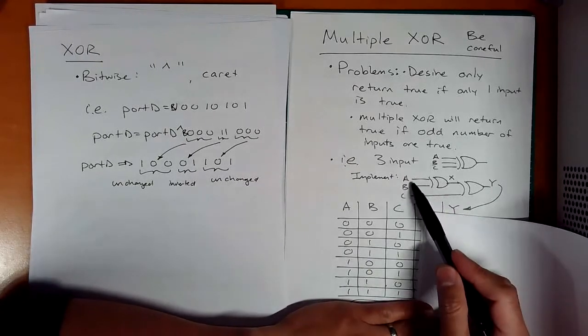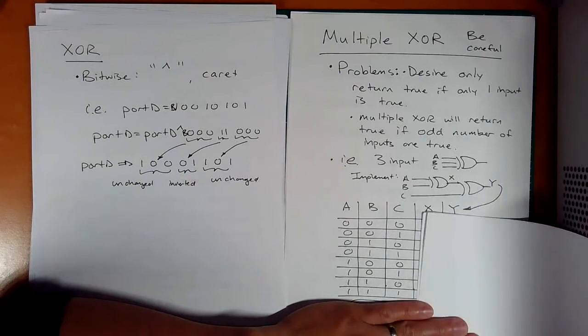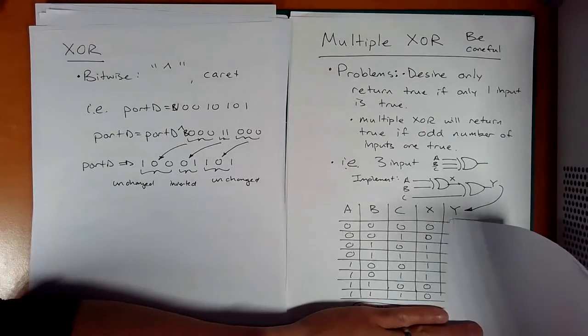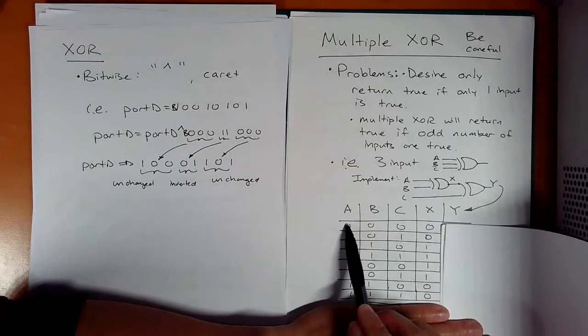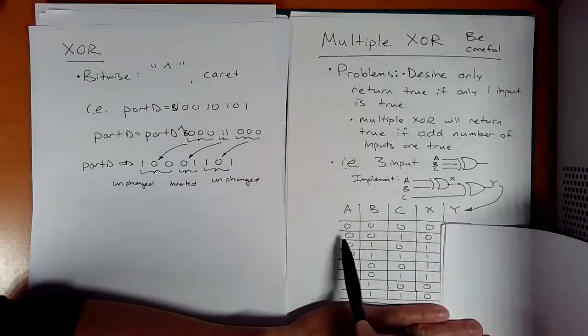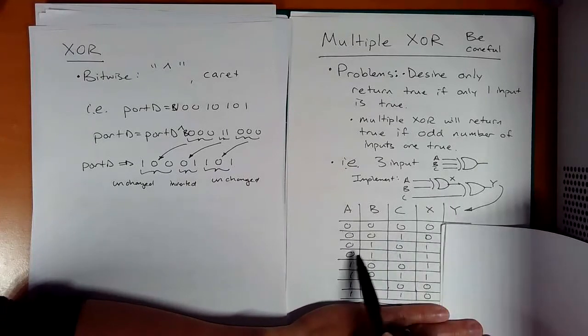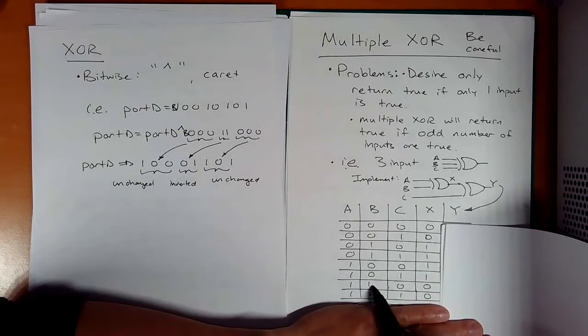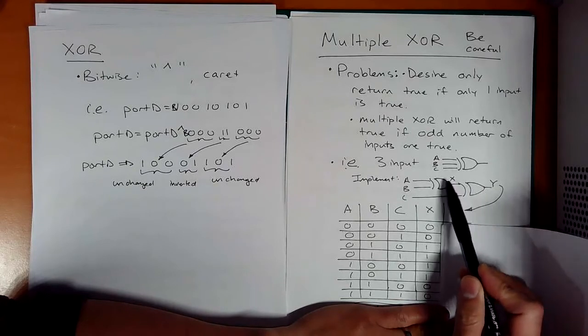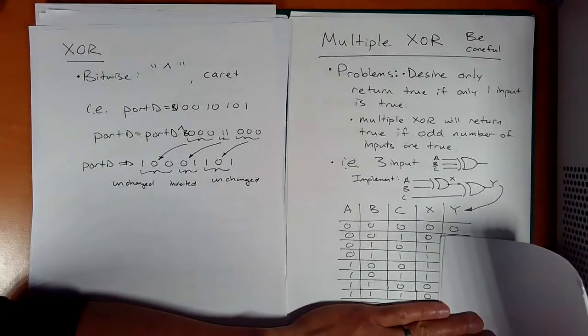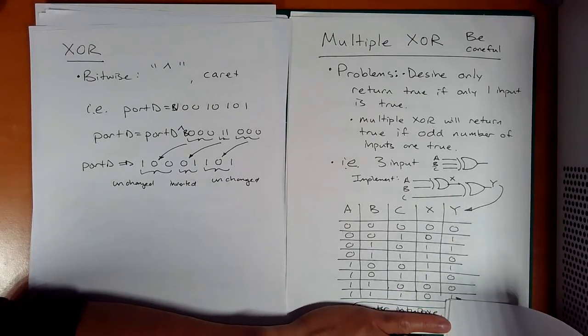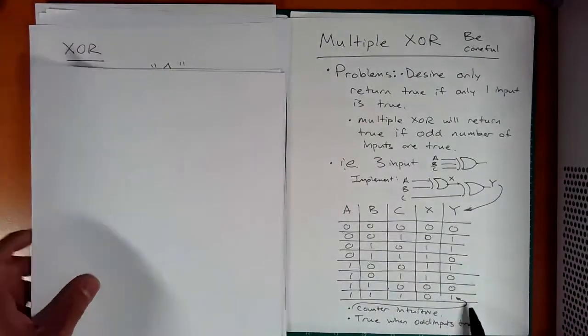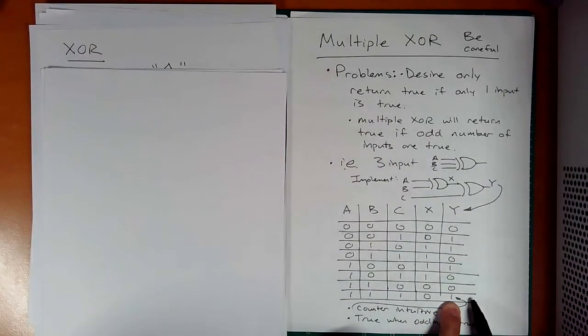We can play the game of building out what is x and what is the final output y. For x, we just look at a and b. X only cares about a and b. We do the exclusive OR: 0, 0, 1, 1, 1, 1, 1. These both are high, so 0, 0. Now we can look at the exclusive OR between x and c. What do we have? 0, 1, 1, 0, 1, 0, 1, 0, 0, 1. This is the counterintuitive part I want you to be aware of.